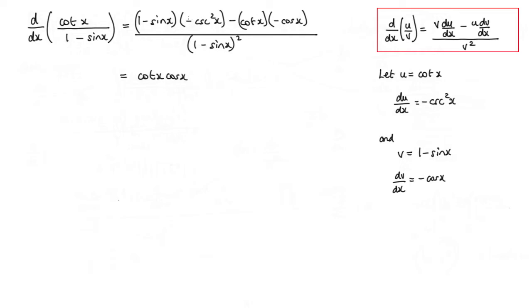I've got this negative here, so I'll pop that there and then multiply these two together. So I've got cosec squared x times by 1 minus sin x.